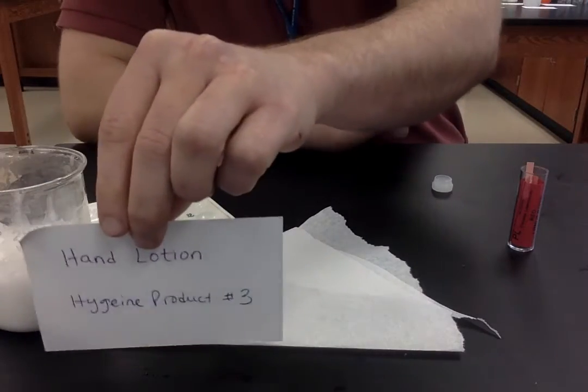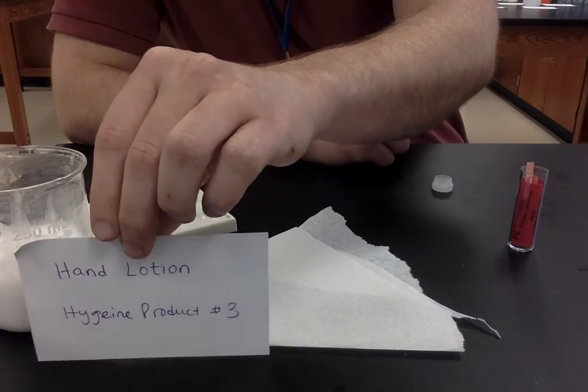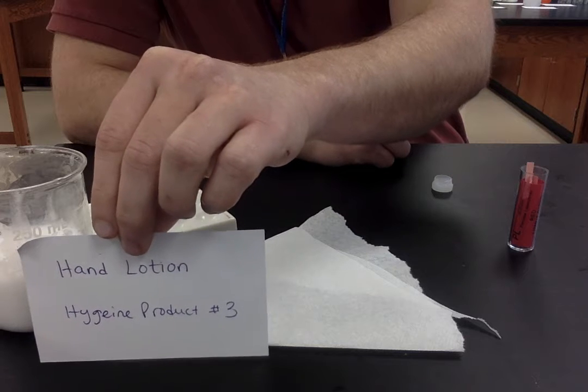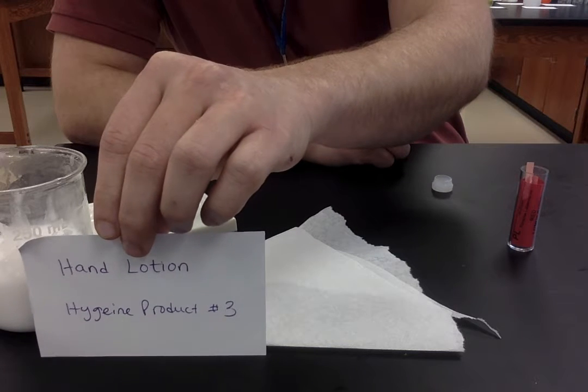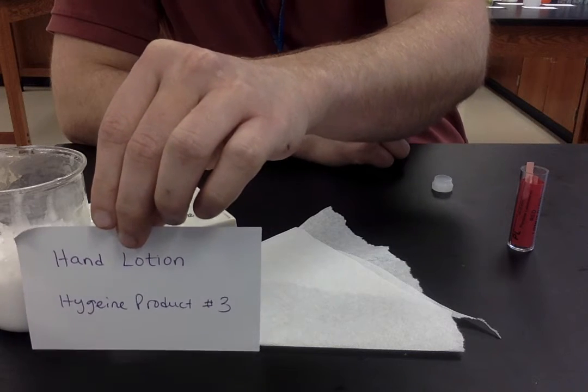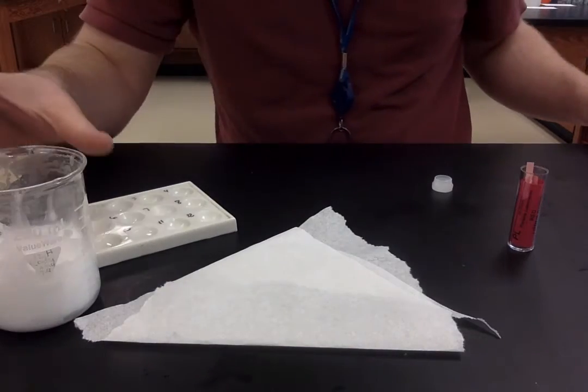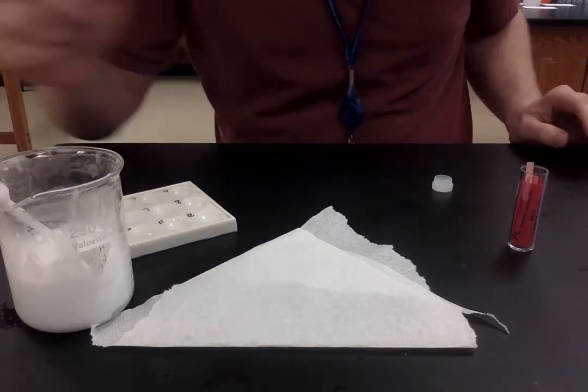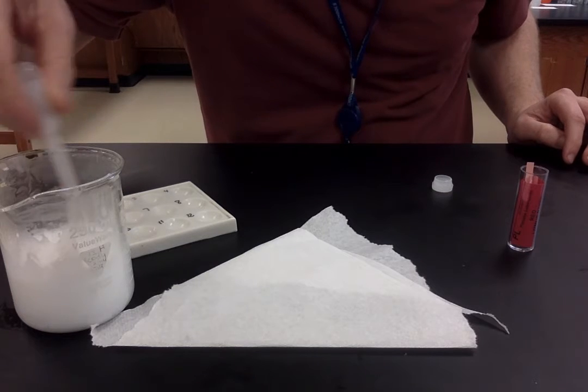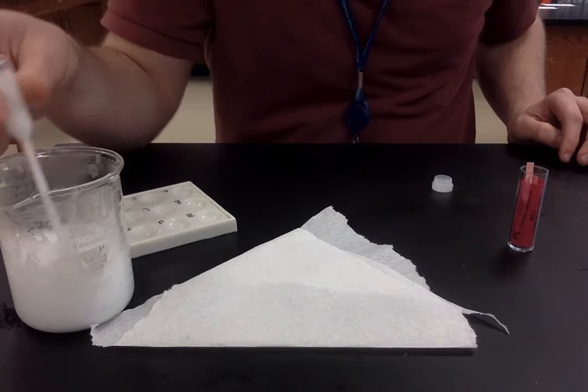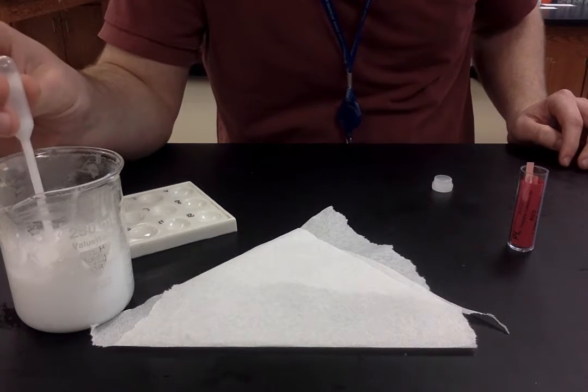All right folks, in trial three of part two of the household acids and bases lab, our third hygiene product is going to be hand lotion. You can see I got a thing full of hand lotion here. I will say I did dilute it, so I put a bunch of water in there to make it so that I could suck it up easier in the dropper.